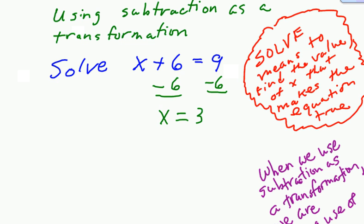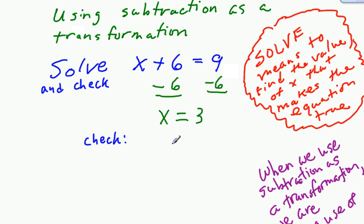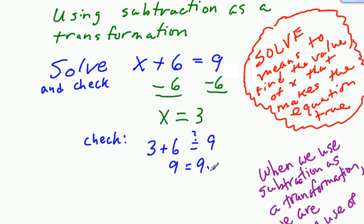One other thing we're going to need to do — and it's very important when we get to multi-step equations — we're going to check this equation. This is our way of making sure we've gotten the solution, and this is a requirement. A check means you take your value and plug it back in. We'll put a question mark over the equal sign and ask: does 3 plus 6 equal 9? Yes — 9 equals 9. Now I'm okay to circle my solution.